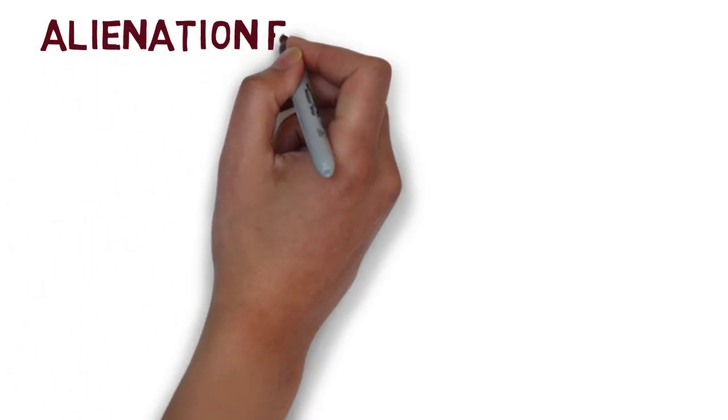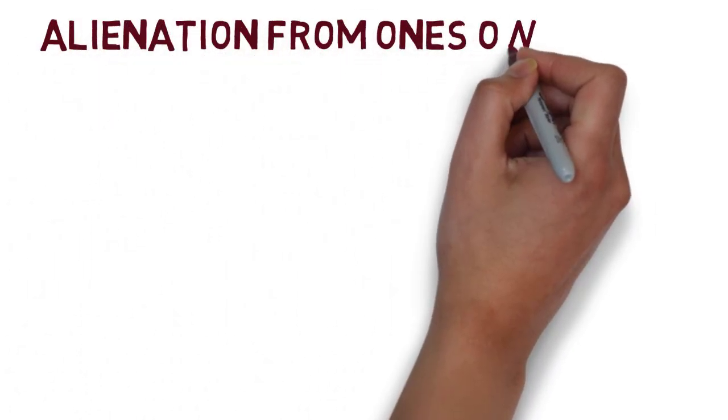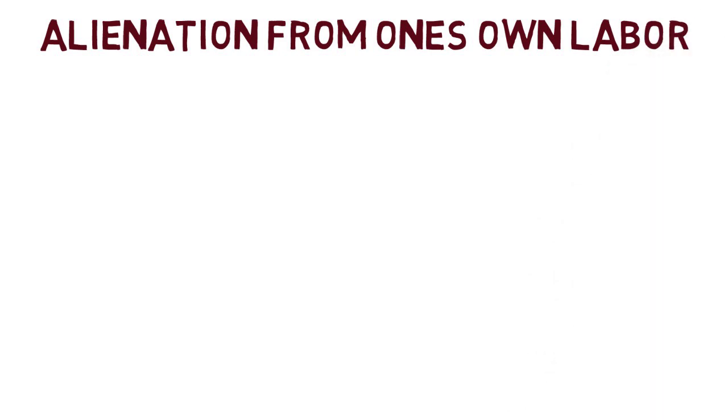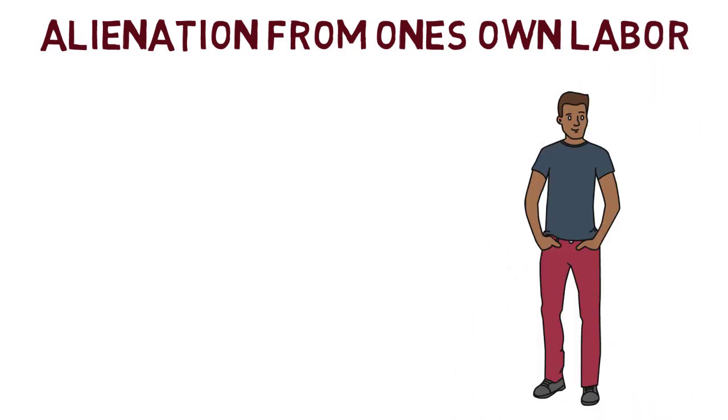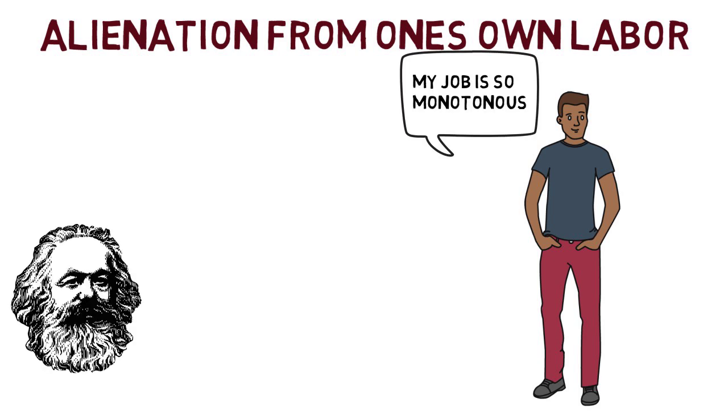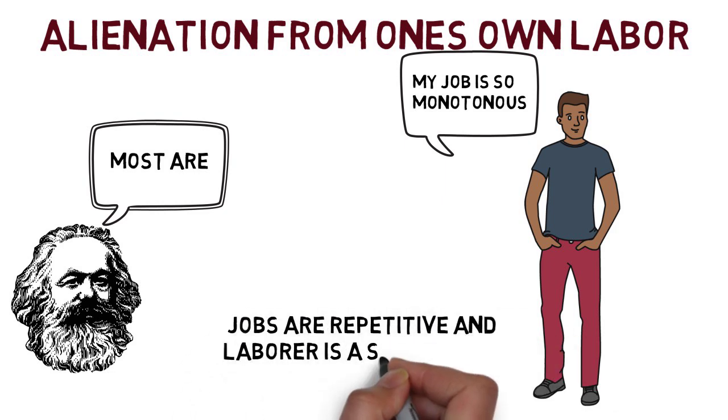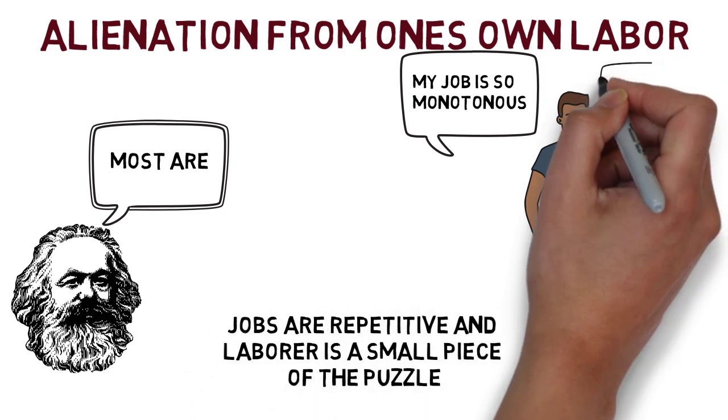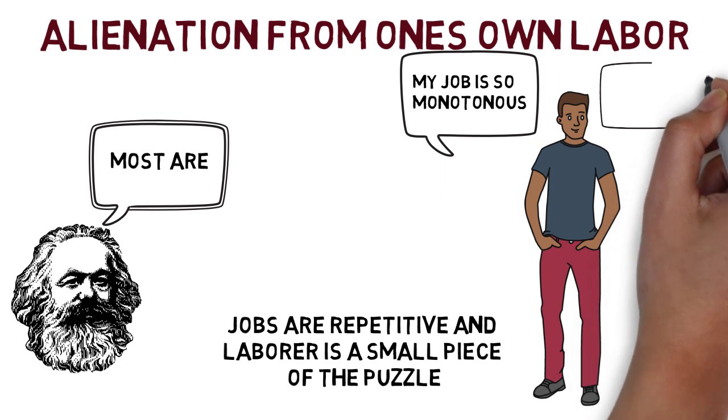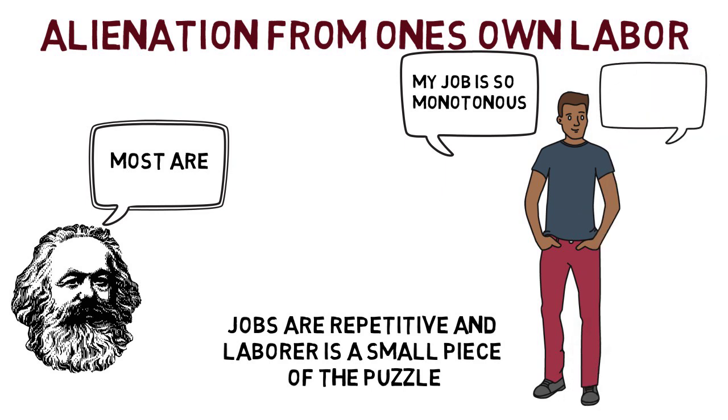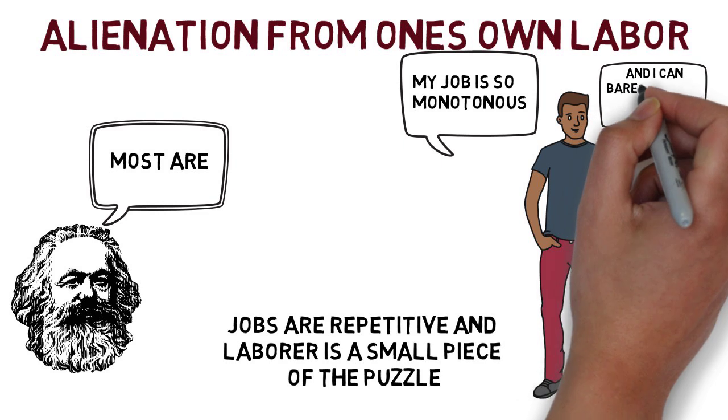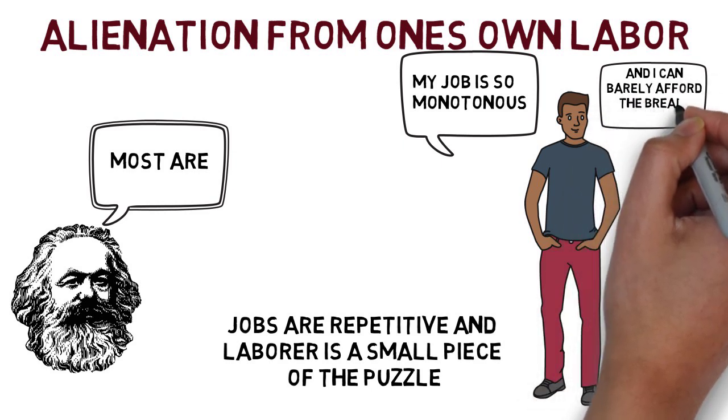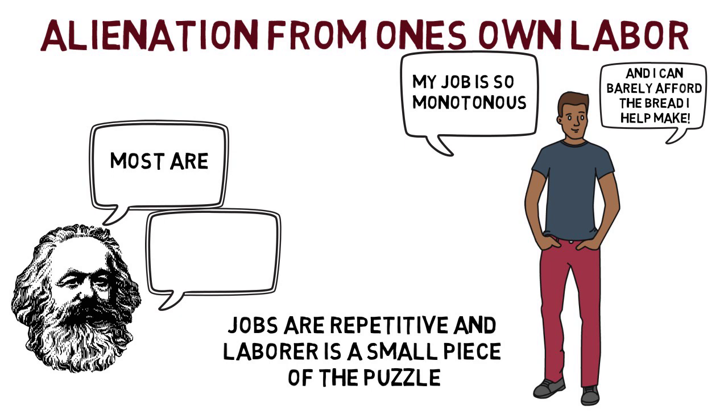The second type of alienation is alienation from one's own labor. Making products in a capitalist system puts many people in positions that are repetitive and laborers end up going through the motions. They have one highly specialized job in producing the whole product. The laborer does not give input into the purpose, design, distribution, and marketing of the product. Basically, the worker is just one small piece of the puzzle. The laborer works for wages and they often cannot afford the products that they help produce.